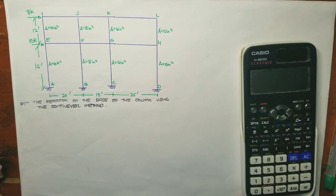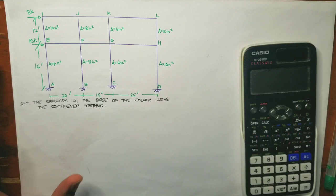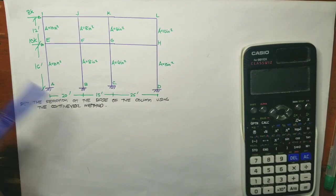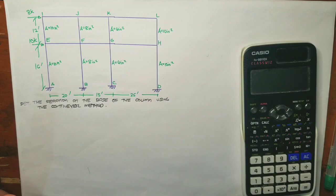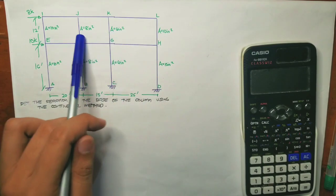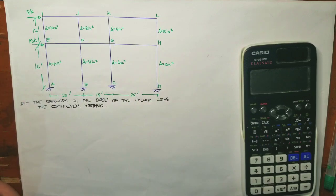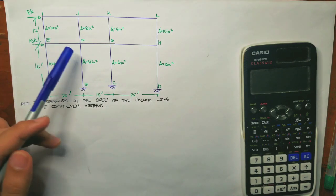There are several steps to follow. Step one: determine the center of gravity of the columns. When columns have different cross-sectional areas, there are additional considerations. We will first consider the second story by drawing its free body diagram.